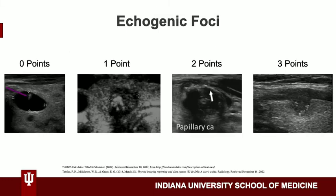Finally, we will examine the nodule for echogenic foci. If there are no echogenic foci, or echogenic foci with comet tails, it gets zero points. If there are macro calcifications it gets one point. If there are peripheral calcifications it gets two points. If there are punctate echogenic foci it gets three points.